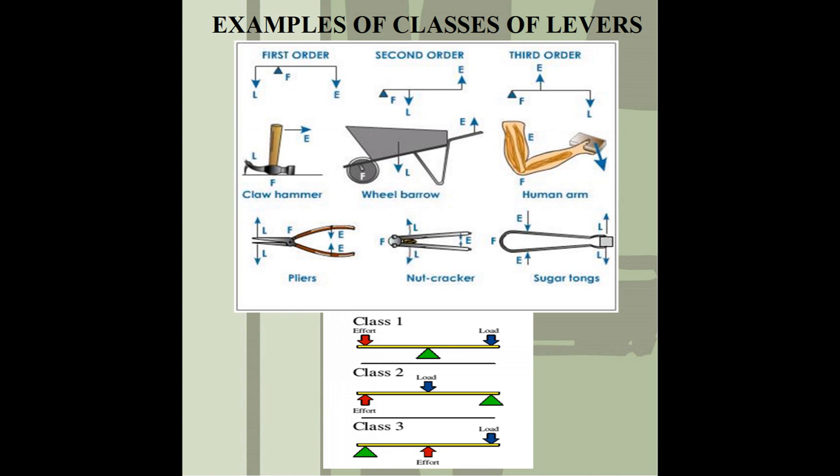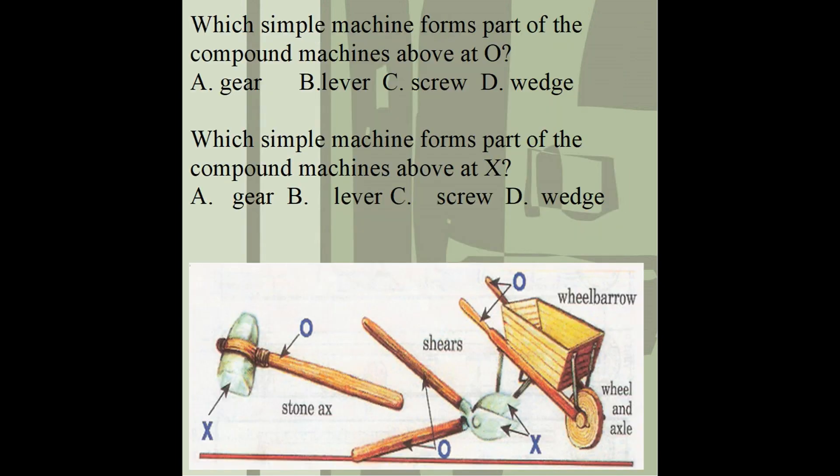A hammer is a perfect example of a first class lever — in the center you have the fulcrum, then you have the effort, then the load at the end. A wheelbarrow is a perfect example of a second class lever, and the arm is a perfect example of a third class lever. A pliers is also an example of a first class lever, a nutcracker is second class, and the sugar cane press machine is an example of a third class lever. You can identify them by which component — load, effort, and fulcrum — appears in which position.